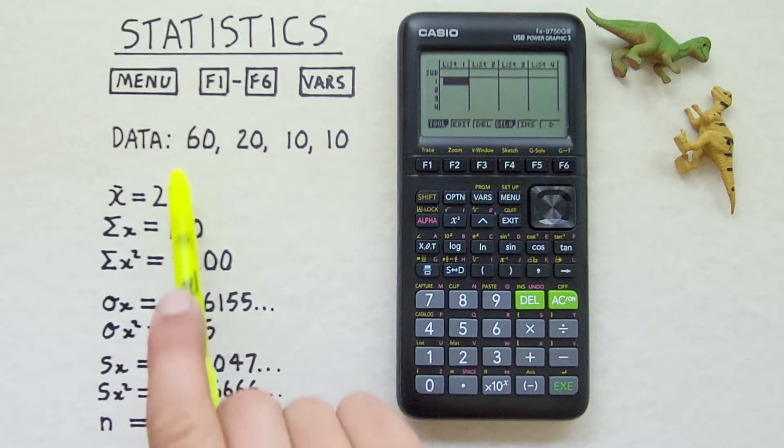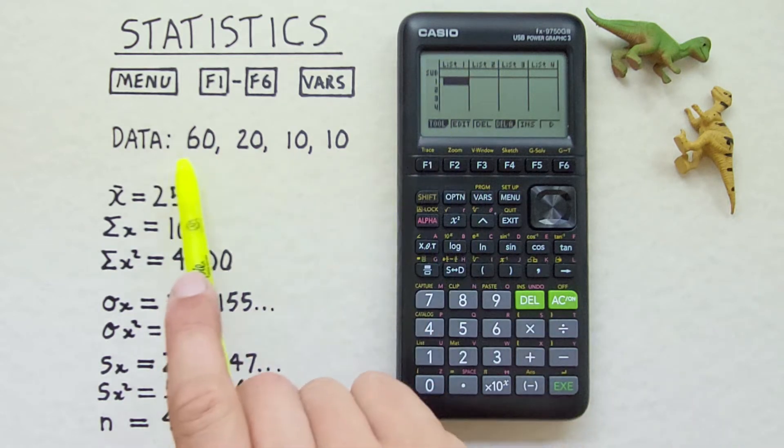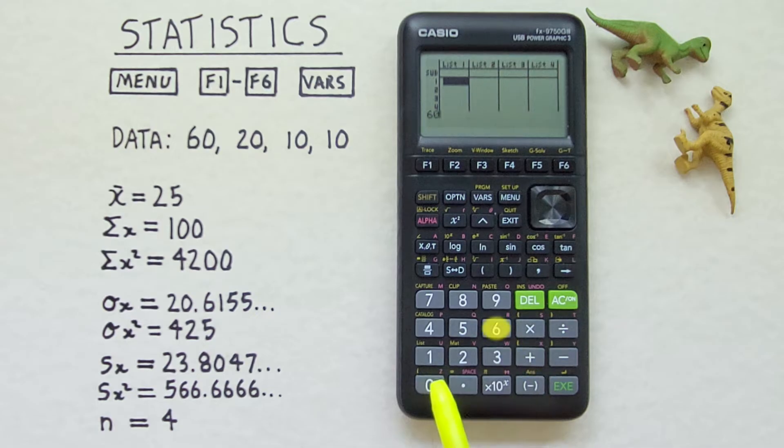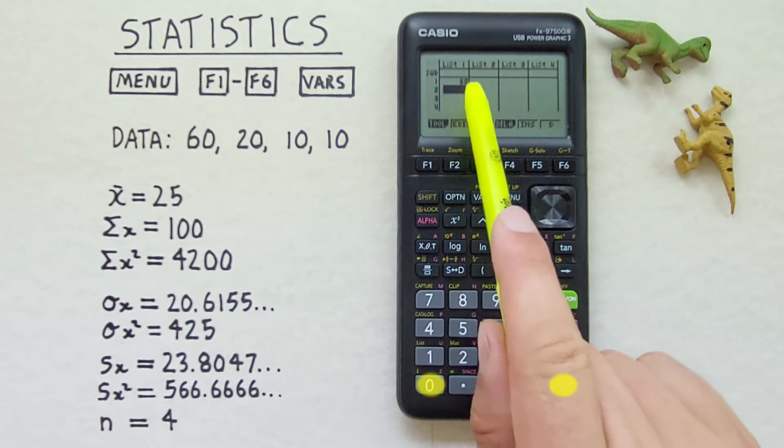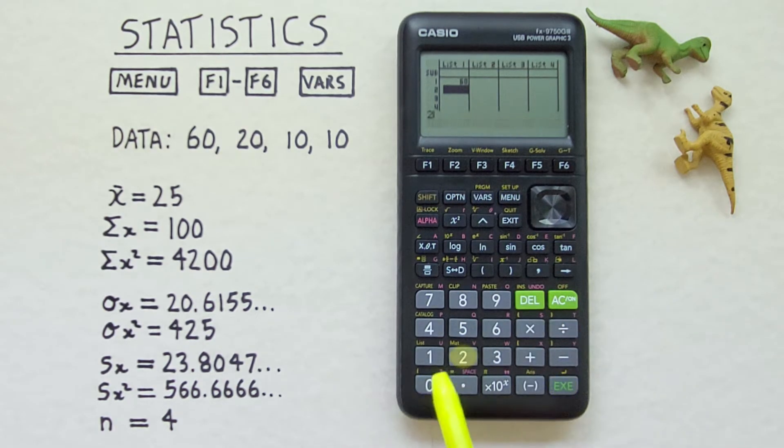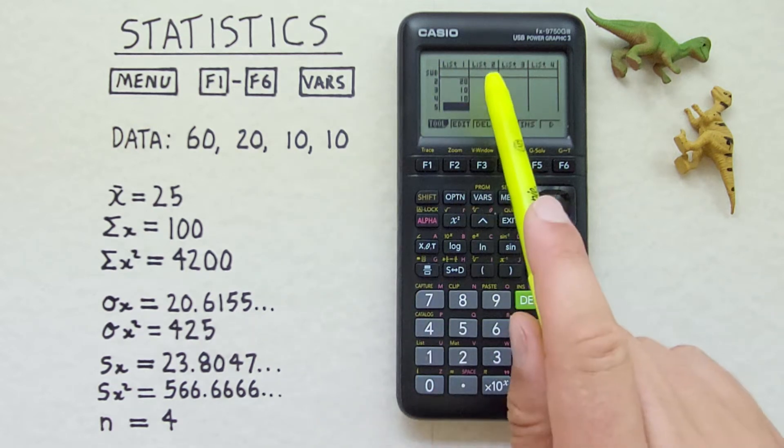Now we want to enter our data into this list one. So we'll start with 60. Hit the EXE. There we go. 20. 10. And we see we have two tens here. If we have a lot of repeating numbers we can use a frequency to add them all in at once. But since we only have two right now we'll just enter them all individually and we'll come back to that frequency. So we'll enter our second ten there. There we go. All our data has been entered.